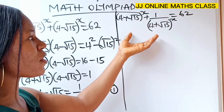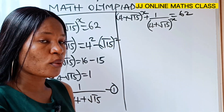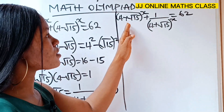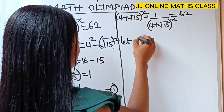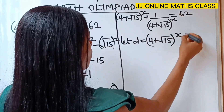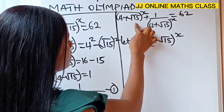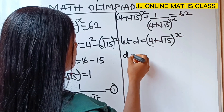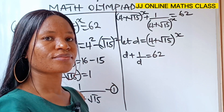When you have something like this, to make the equation simpler you can decide to call this anything. Let's call 4 plus root 15 to the power of x as d. So let d equal 4 plus root 15 to the power of x. Anywhere I see this I'm going to substitute d for it. That means this can be written as d plus 1 over d is equal to 62.